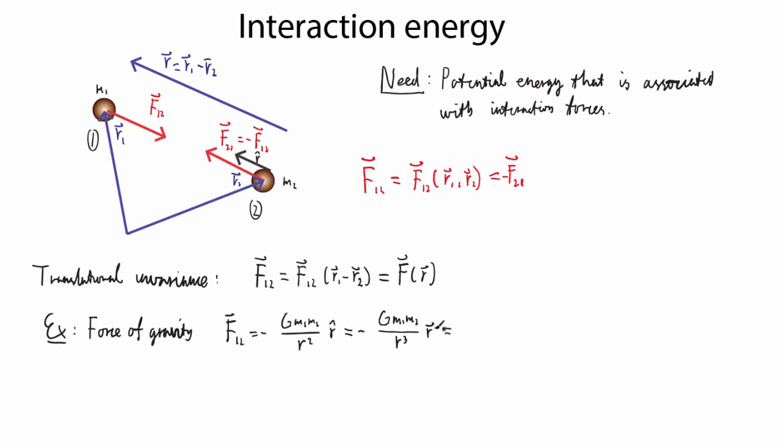Another way we can write this is as minus G M1 M2 divided by R cubed times the vector R. Now since R is R1 minus R2, this is, of course, minus G M1 M2 times vector R1 minus vector R2 divided by vector R1 minus vector R2, their magnitude squared.